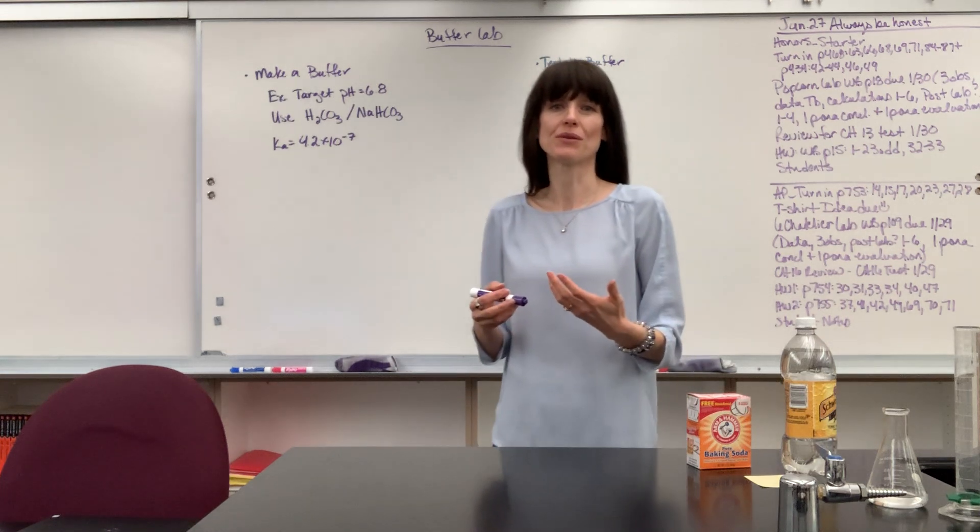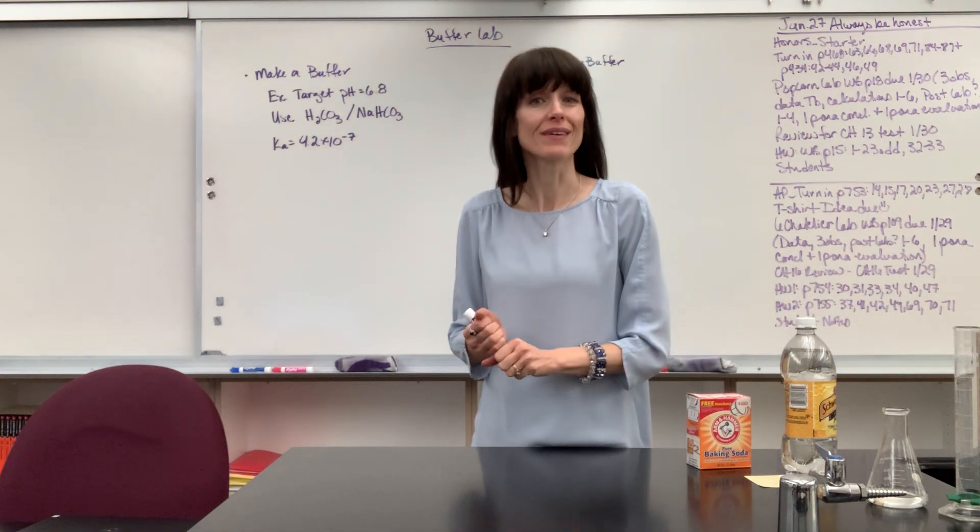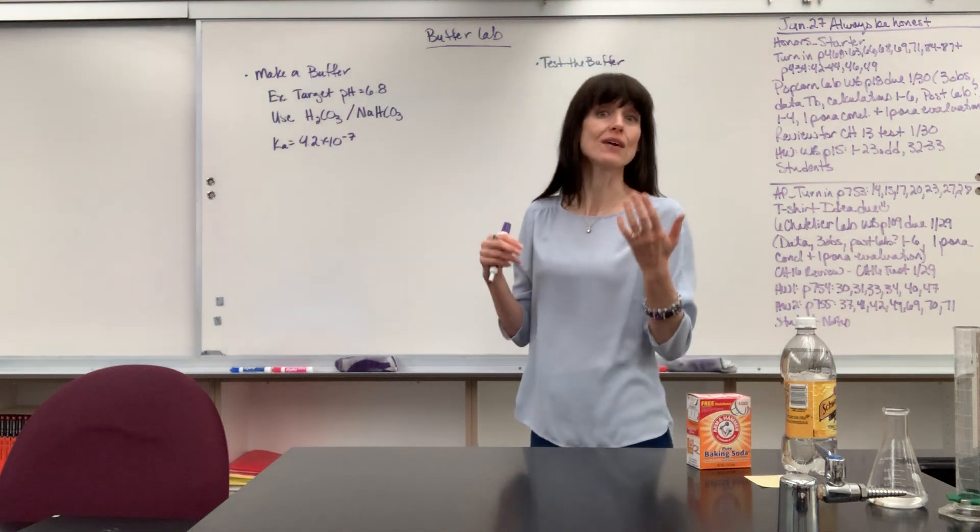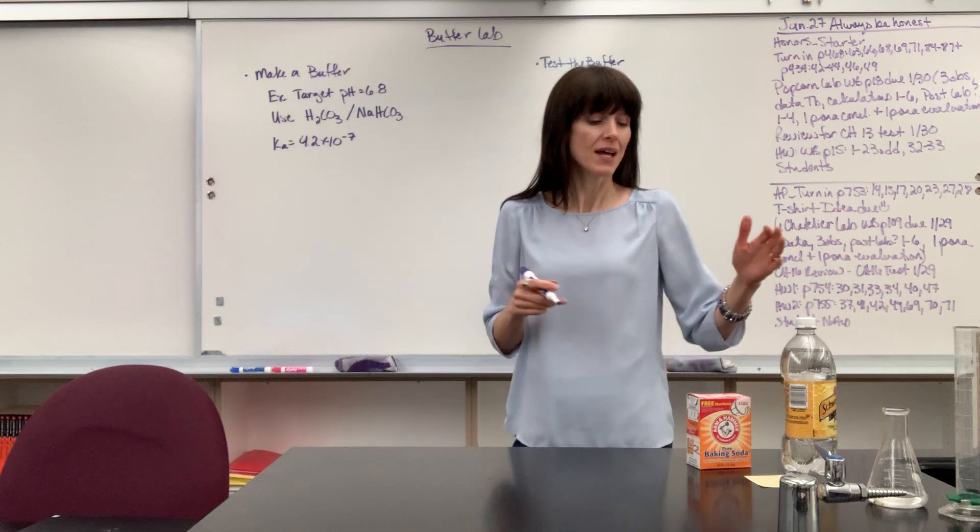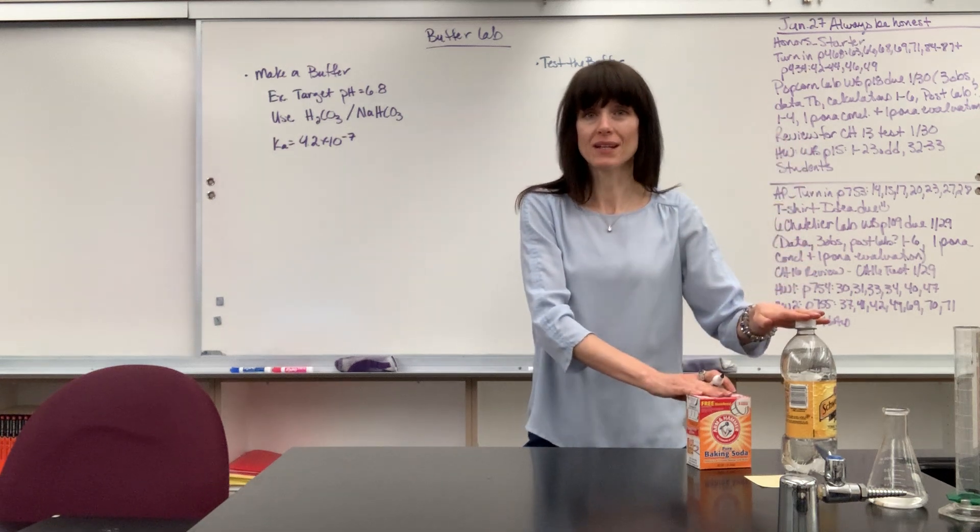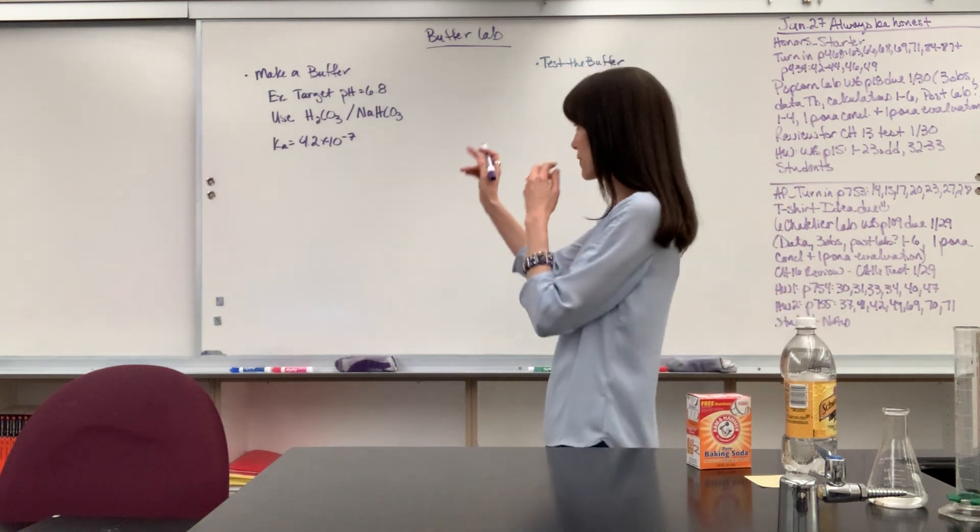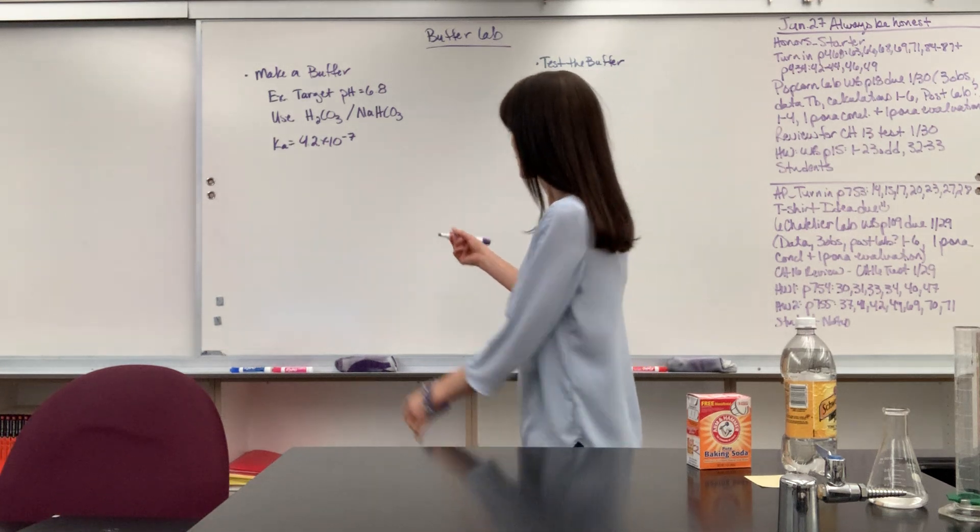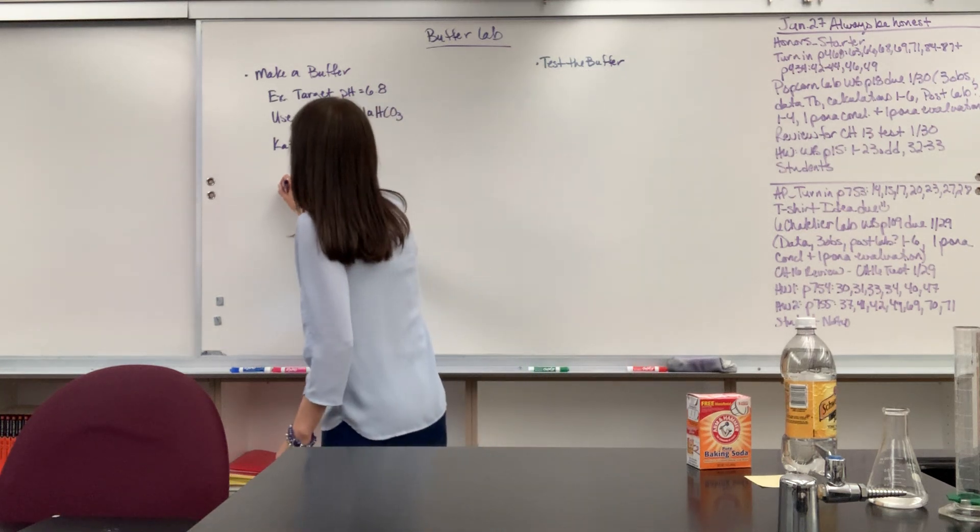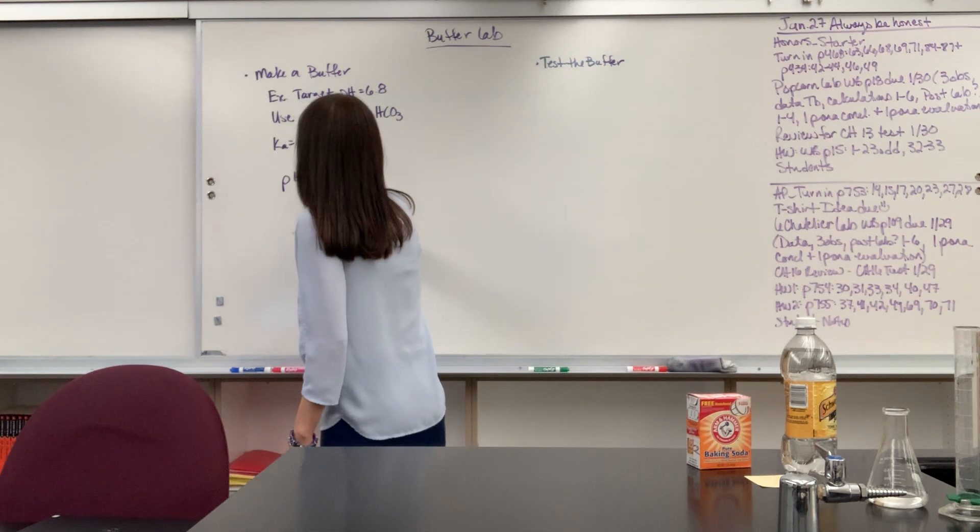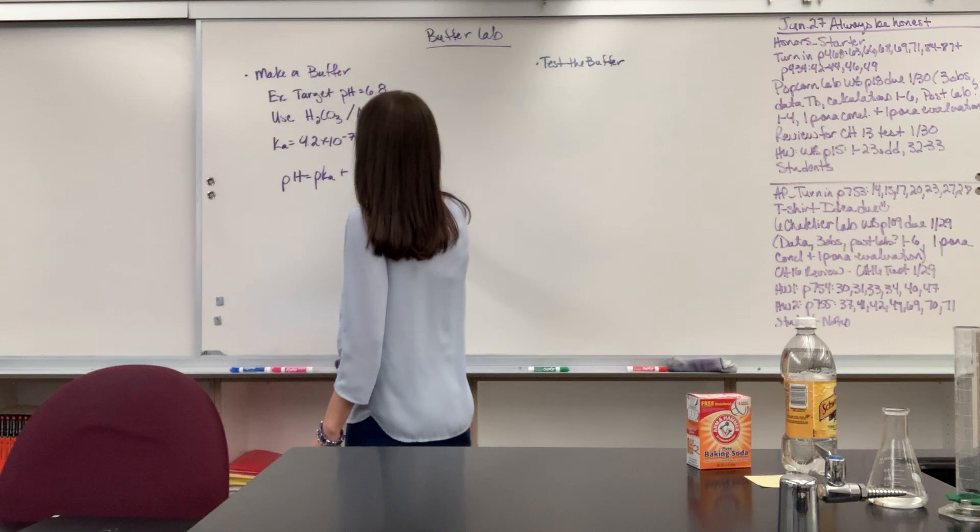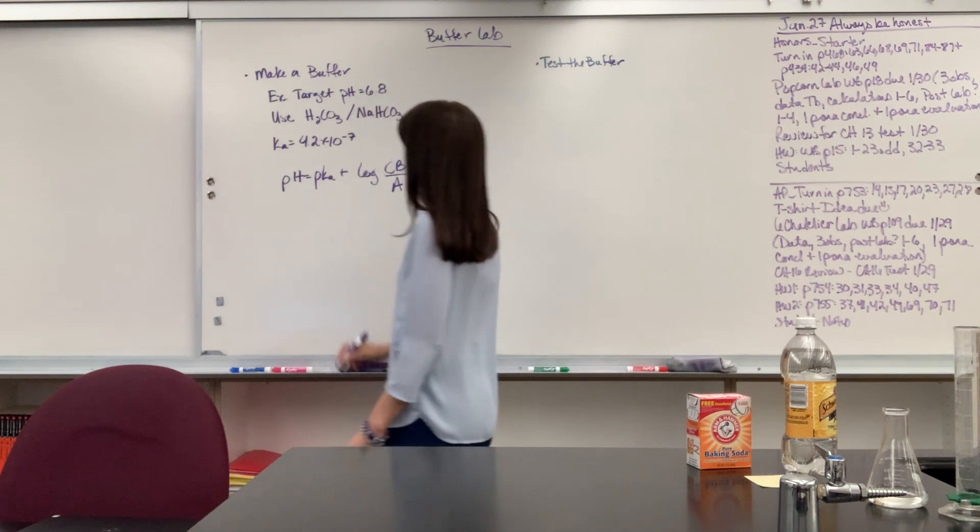In order to make a buffer, we're going to use Henderson-Hasselbalch. So let's write down that formula and that's going to drive and lead us in how to determine what we need of each of these to make a buffer that is 6.8. So here's our Henderson-Hasselbalch. We have pH equals pKa plus the log of the conjugate base divided by the acid.